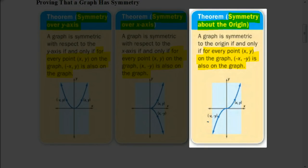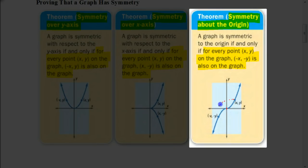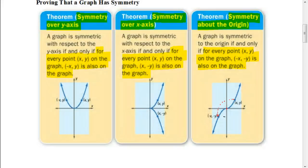The last theorem covers how to determine whether something has symmetry over the origin. The origin is the point (0, 0). To see if there's reflection over the origin, for each point (x, y) on the graph, the point (-x, -y) must also be on the graph. For example, with a cubic function, a coordinate (x, y) when reflected over the origin maps to (-x, -y) — both the x and y values become their opposites.